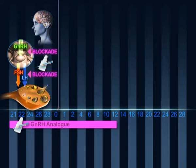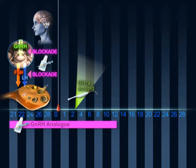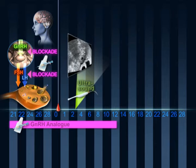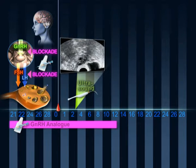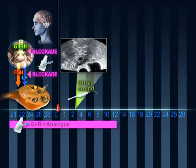Around the time of menstruation, a scan is performed to check the thickening of the endometrium of the uterine cavity and rule out the presence of cysts in the ovaries.